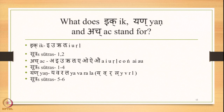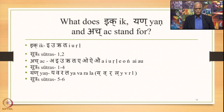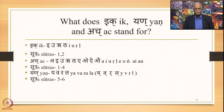To summarize what each Pratyahara stands for: Ikk stands for E, U, Ru and Lu, as stated in Sutras 1 and 2. Ach stands for A, E, U, Ru, Lu, A, O, I and Au, as stated in Sutras 1 to 4. Yan stands for Y, V, R, L, as stated in the Pratyahara Sutras.